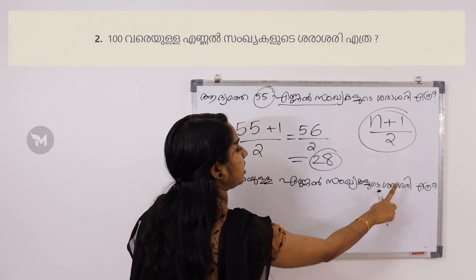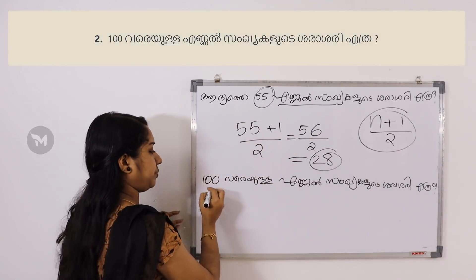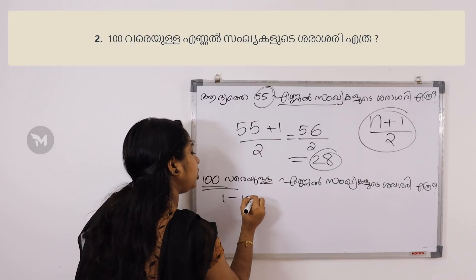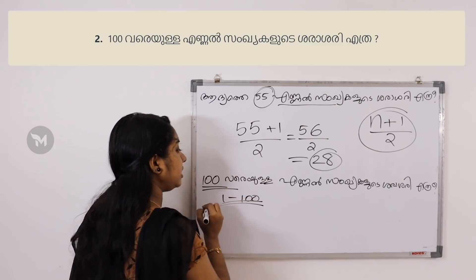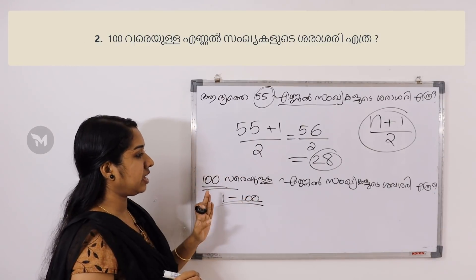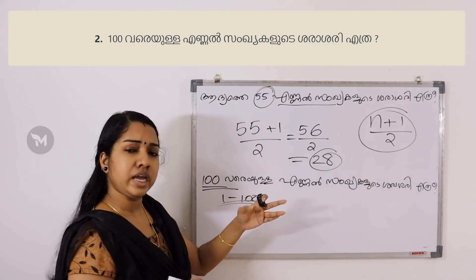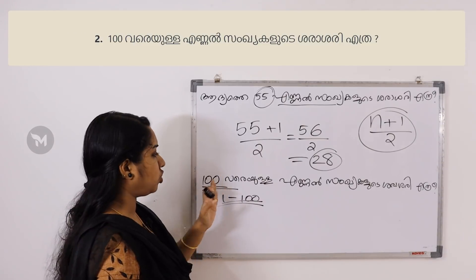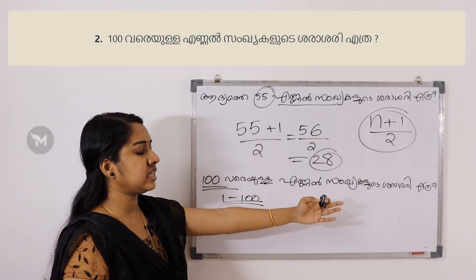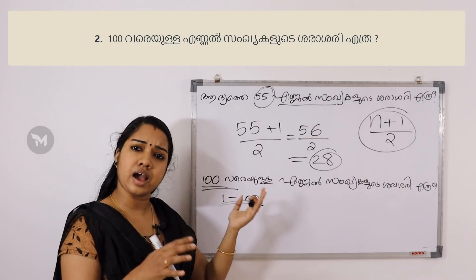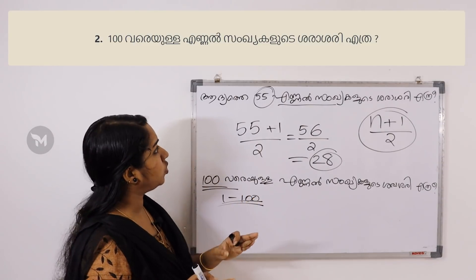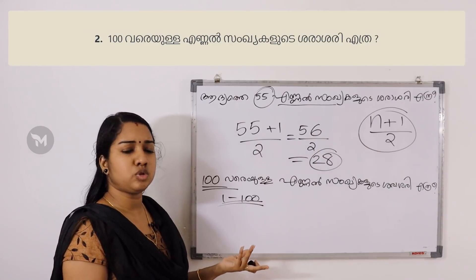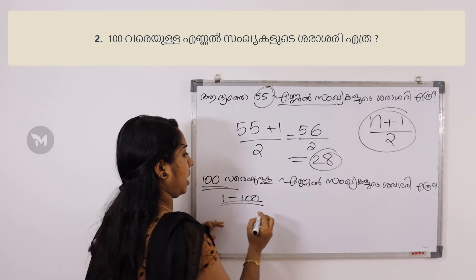If you make a count of n, if you make a count of 100, then you will add 100. If you make a count of 100, you will add 100, and then add 100 again.